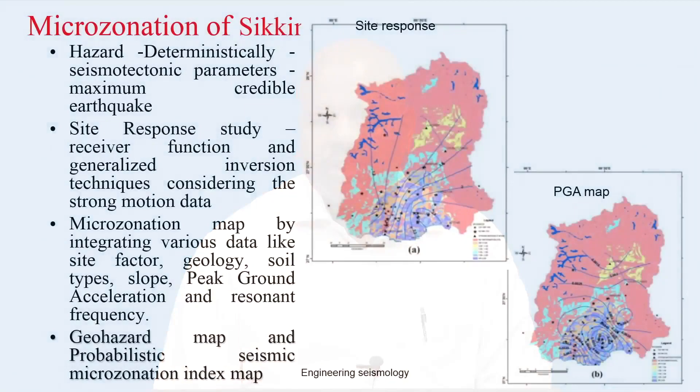Another microzonation map published is the microzonation of Sikkim. Sikkim is a state, whereas Delhi and Jabalpur are cities, so this work is somewhere in between micro and macrozonation because the study area is very large.